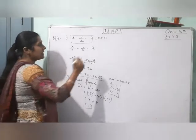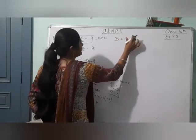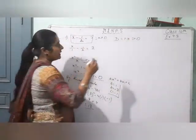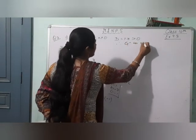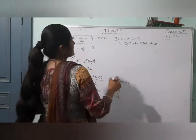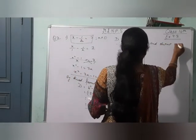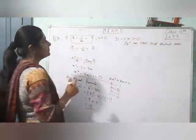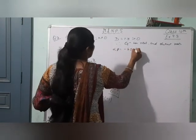D is 13, which is greater than 0. Therefore the equation has real and distinct roots. Distinct means two different roots. This equation has two solutions, alpha and beta. We find alpha and beta by the quadratic formula.